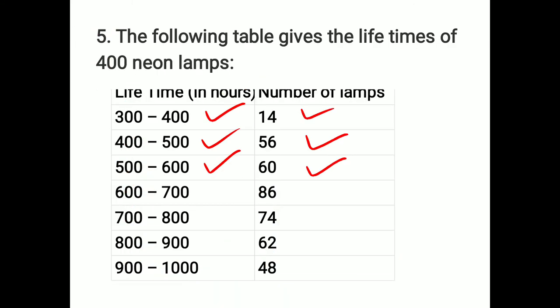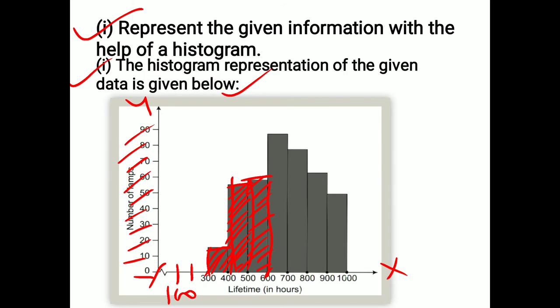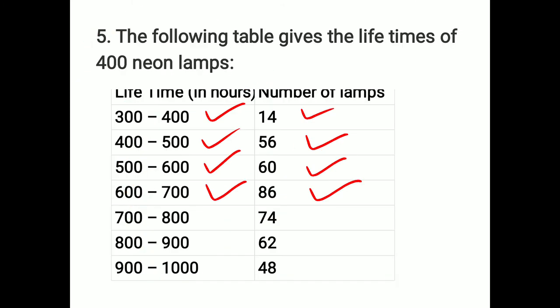Shaded. We have done 600 to 700, we have done 86. So that means we have done 86 and what we have done? Shaded. Then we have done 74. When we have done 74, we have done 74.